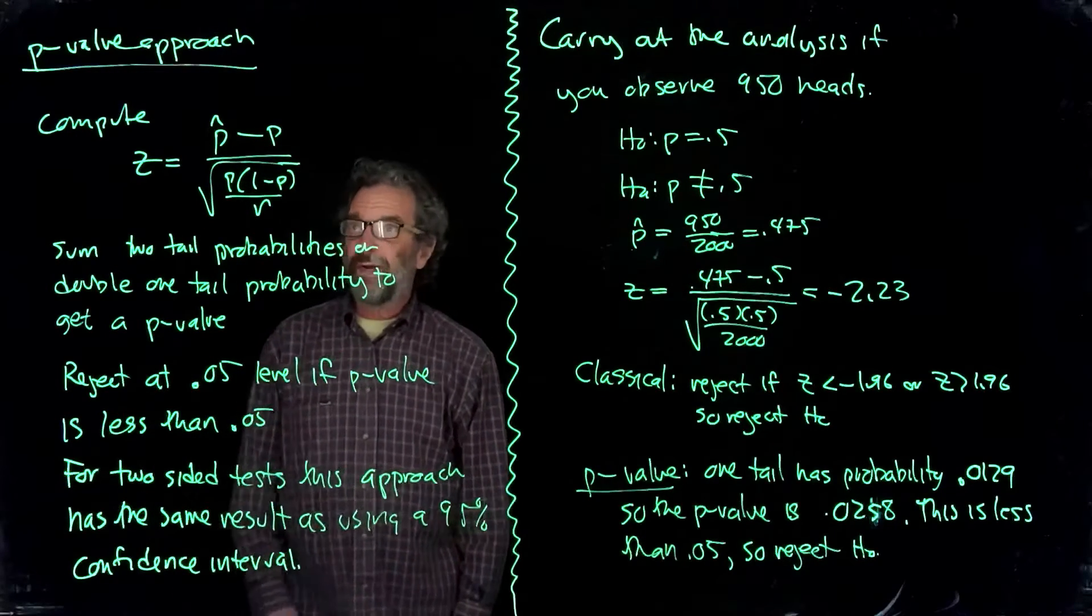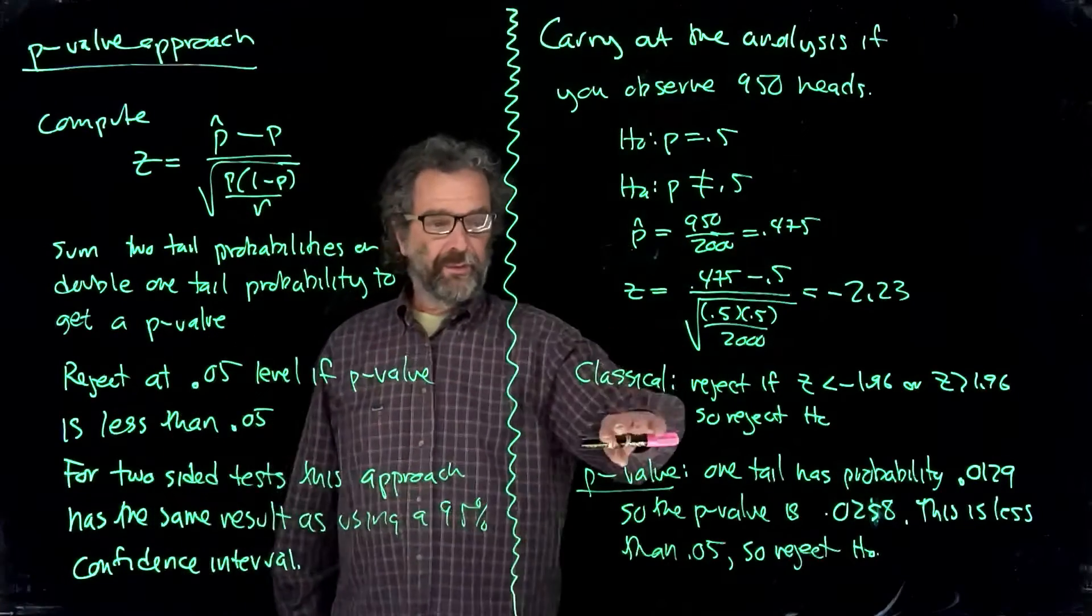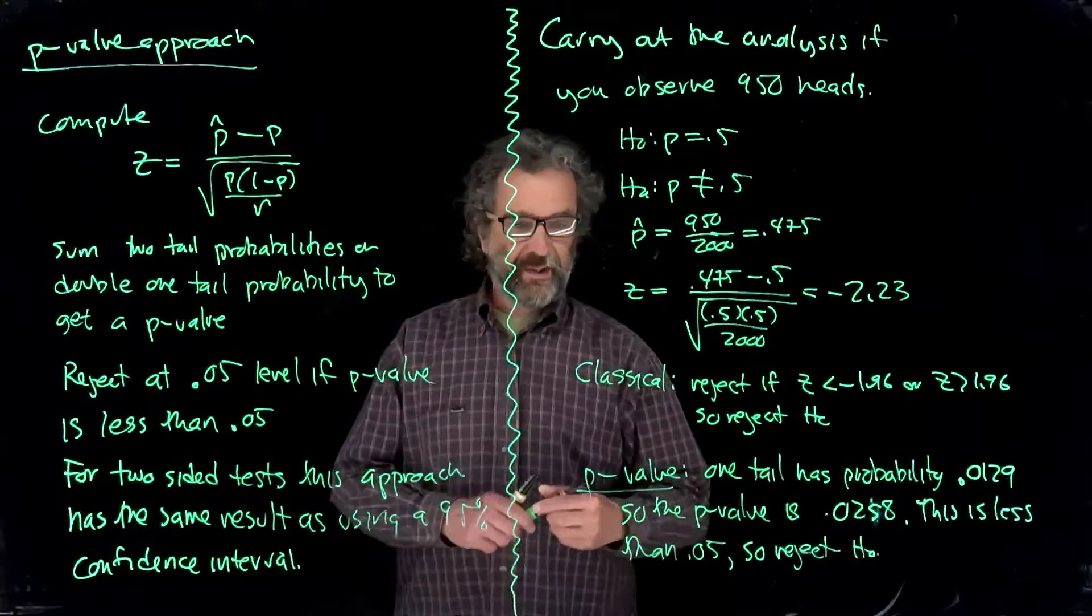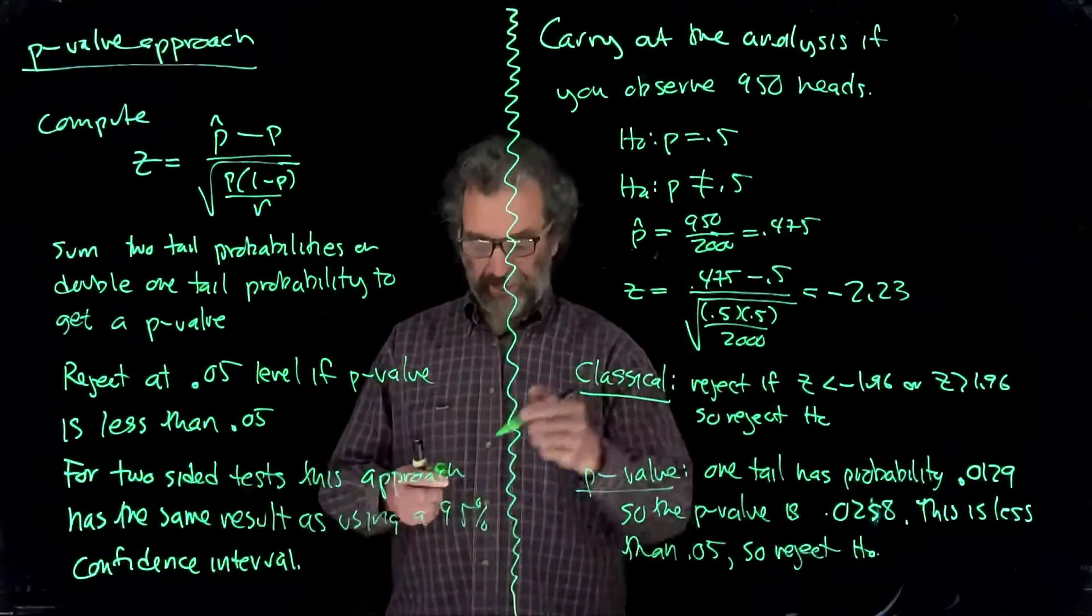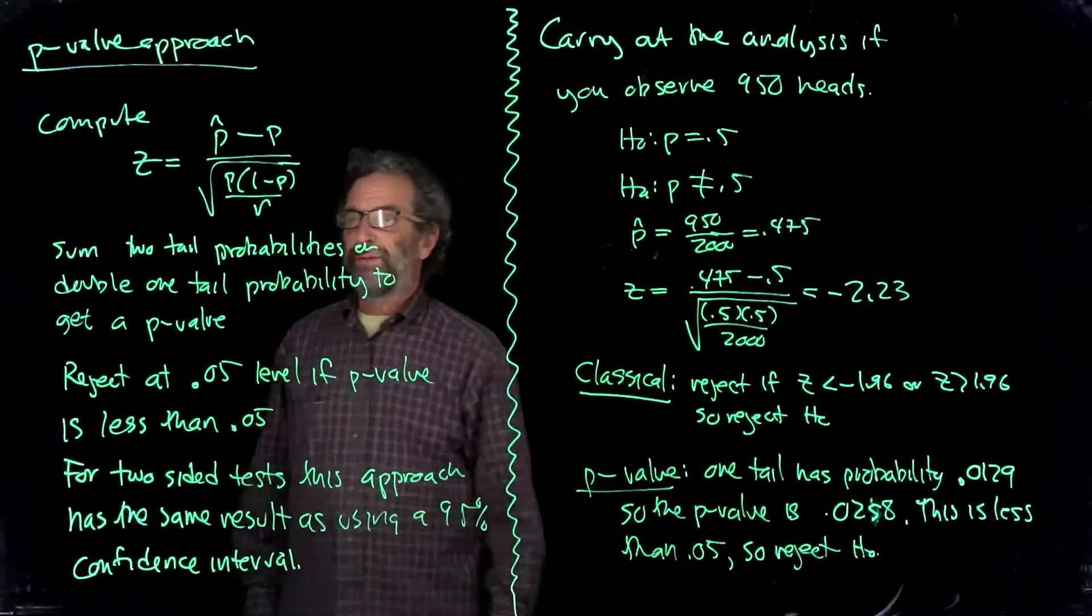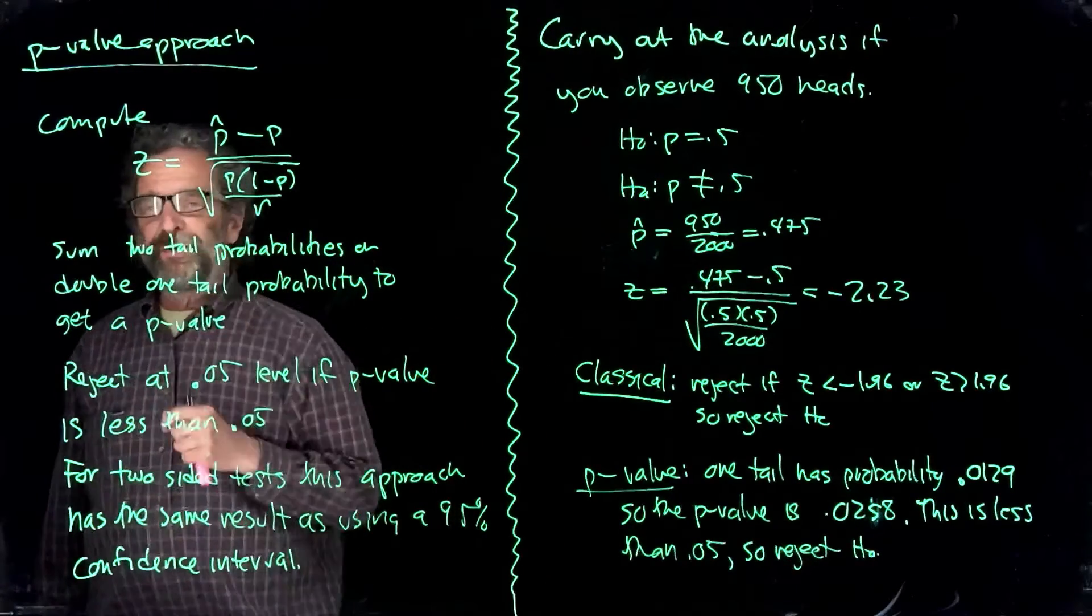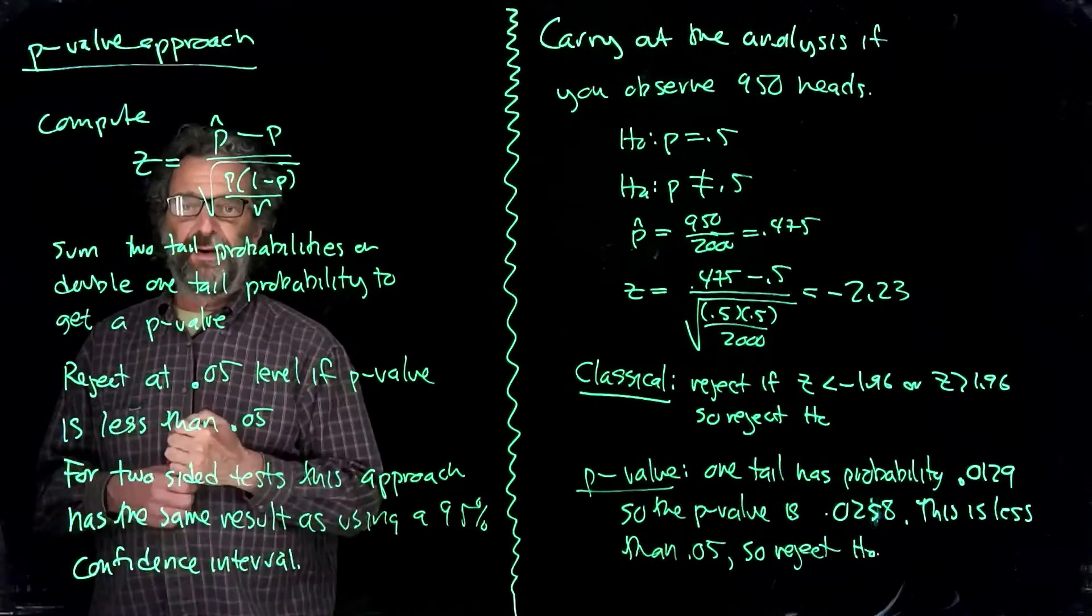We'll continue with the p-value approach and then carry out the actual analysis with the p-value approach and the classical approach based on some observations that we might make. So here's the p-value approach. The p-value approach says you compute z, since we're doing proportions. You would compute t if it was the mean, but we're not there now.